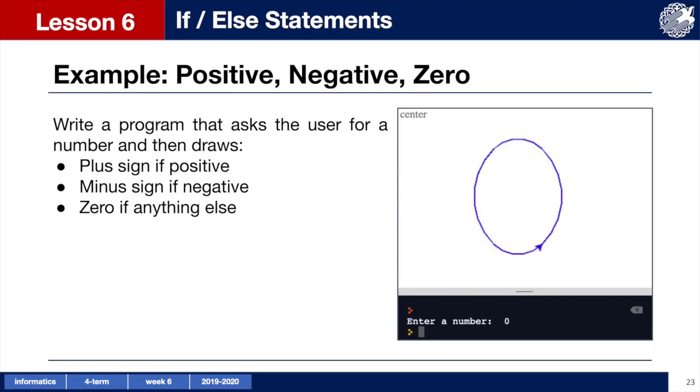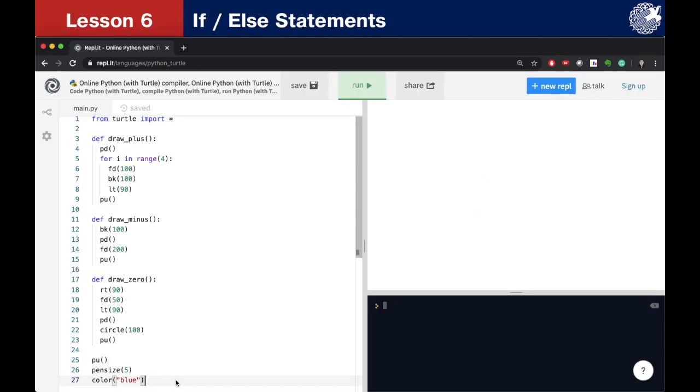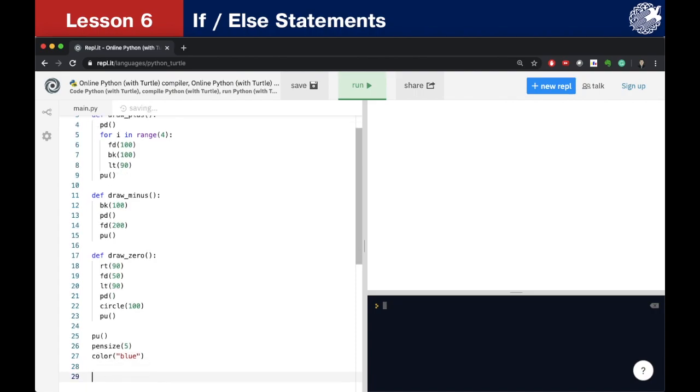Let's take a look at using if-else statement in some Python Turtle programs. In this challenge we are asked to graphically represent if a number entered by a user is positive, negative or zero by drawing a plus sign, minus sign or circle. I started our code by drawing functions that draw plus sign, minus sign and circle using all the commands we have already learned. So let's start by asking for user input. We can write number equals int input, enter a number.